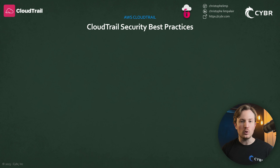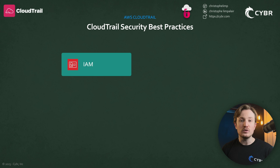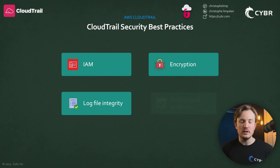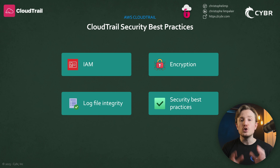We will then wrap up the course by explaining how to secure our CloudTrail deployments and log files by using IAM, by using log file integrity, encryption, and a checklist of security best practices. By the end of this course, you will feel confident in deploying CloudTrail for production environments, and you'll be ready to learn more advanced topics like threat hunting and investigating security events, which we will teach in a separate course.